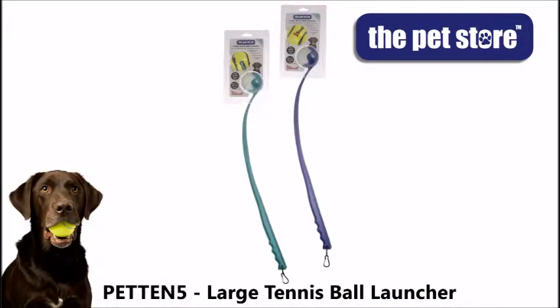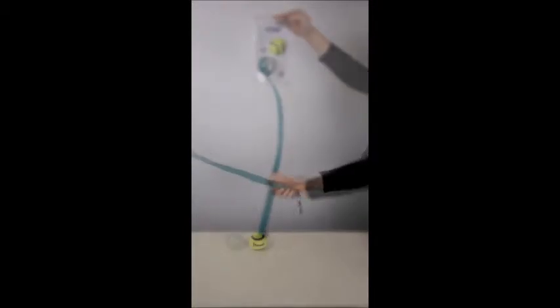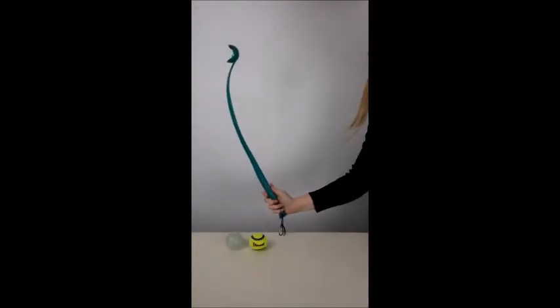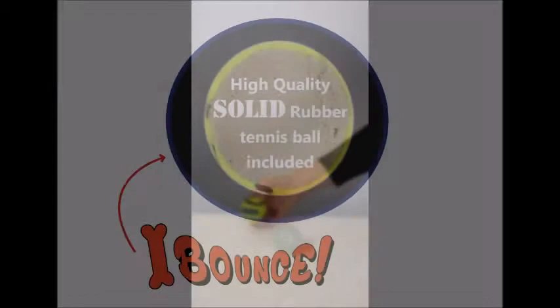The pet store large tennis ball launcher is produced from lightweight yet durable plastic and features an ergonomic hand grip, handy belt clip, and also includes an amazing glow-in-the-dark ball that squeaks and super quality solid rubber bouncing tennis ball with double-sided printing.